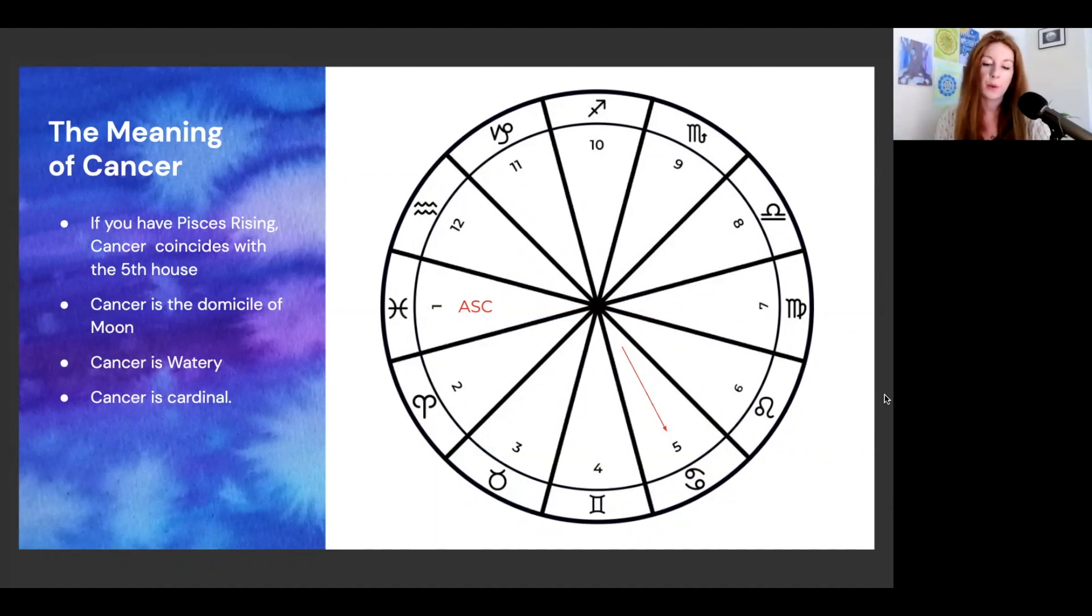I associate Cancer with nurturing, the home, our desire to nest, our interest in the past, nostalgia, memory, deep sensitivity and empathy. The time of the year in the northern hemisphere where Cancer season happens, when the sun is in Cancer, actually marks the beginning of the summer solstice.